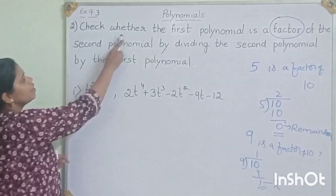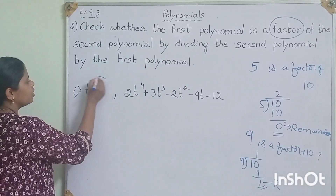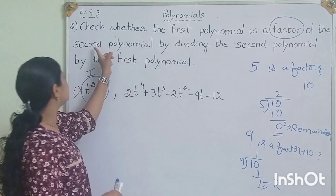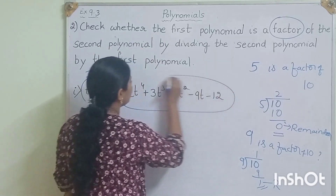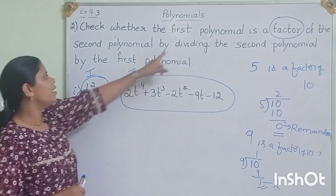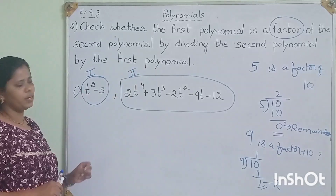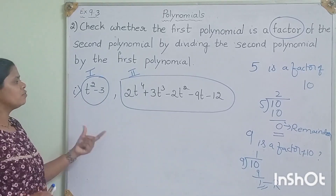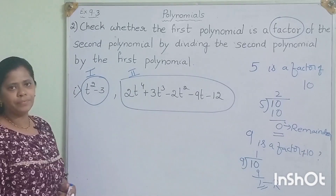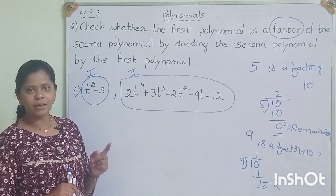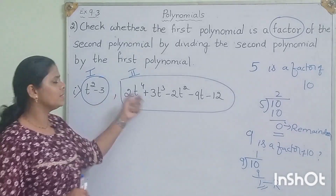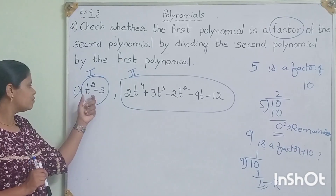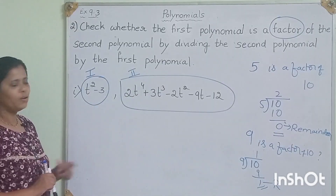In that question, what did they ask? Check whether the first polynomial is a factor of the second polynomial by dividing the second polynomial by the first polynomial. After dividing, if we get 0 as remainder, then only we can say that the first polynomial is a factor. If we do not get 0 as remainder, then it is not a factor.